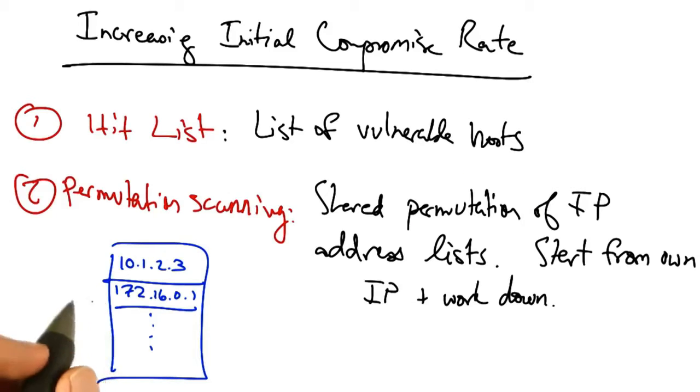If this list is randomly permuted and a particular host starts scanning from its own IP address in the list and works down, then different infected hosts will start scanning from different parts of this list, ensuring that compromised hosts don't duplicate each other's work.